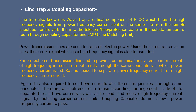It is also required to send two currents of different frequencies through the same conductor. Therefore, at each end of the transmission line, an arrangement is kept to separate the two currents as well as to send and receive high frequency carrier current signals by installing carrier current units. Coupling capacitors do not allow power frequency current to pass.